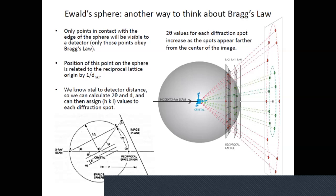If you know the crystal-to-detector distance — typically about 35 mm for small molecules — you can calculate 2-theta and the d-spacing. Combined with the crystal's known orientation (set by machine parameters), you can calculate HKL values for each diffraction spot. This is how the HKL values are constructed, as we practiced in the HKL homework.